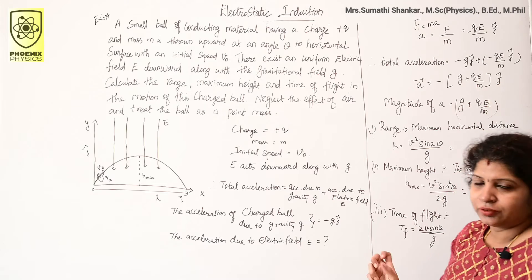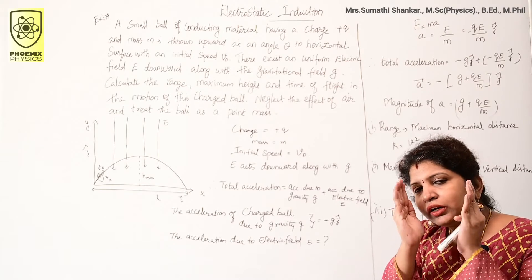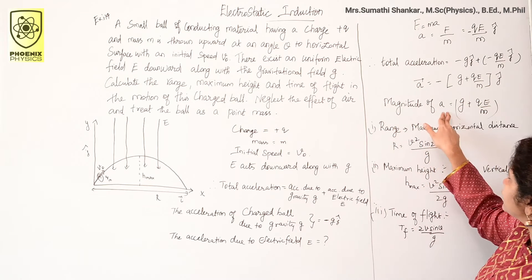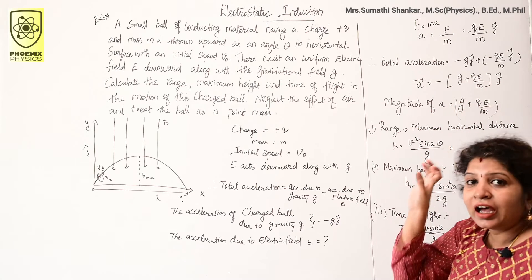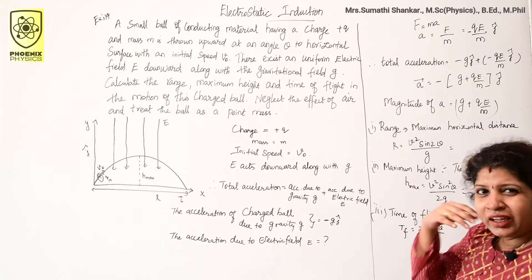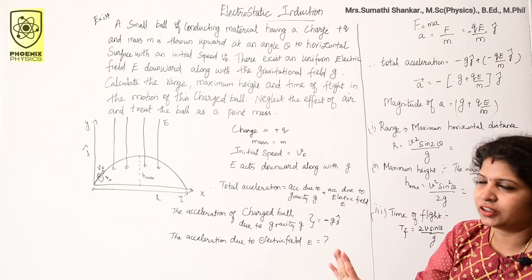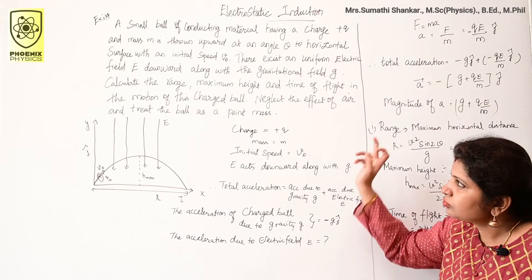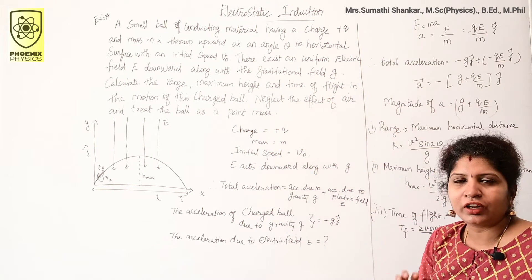The total acceleration is a vector: −(g + qE/m) ĵ. If we want only the magnitude, we do not worry about the sign, so the magnitude of acceleration is a = g + qE/m. This is the effective gravitational-like acceleration we will use in all the projectile formulas.